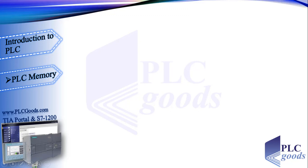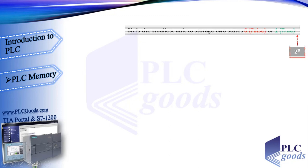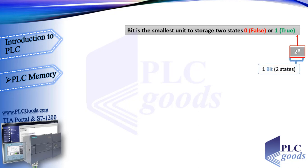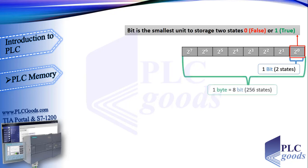We've seen how a program is executed by a PLC. On the other side, an industrial program needs to know electrical equipment states and signal values. So how does a PLC store this information in its memories? In a memory, a bit is the smallest unit to store two states: 0 (false) or 1 (true). A digital input of a PLC only has two states, so it needs 1 bit — 0 when the input is inactive and 1 when active. If we have 8 bits, it's called a byte.